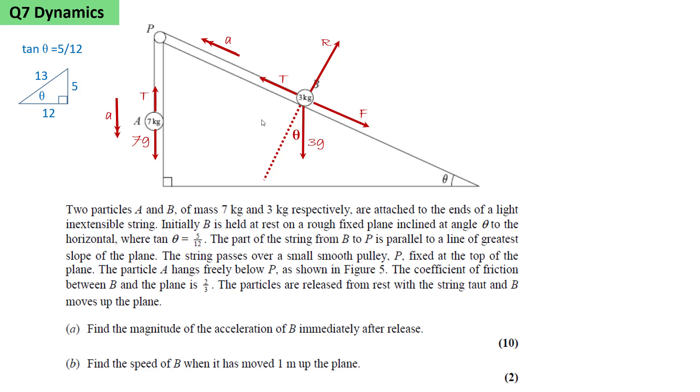Particle A hangs freely below P. The coefficient of friction between B and the plane is 2/3. The particles are released from rest with the string taut and B moves up the plane.